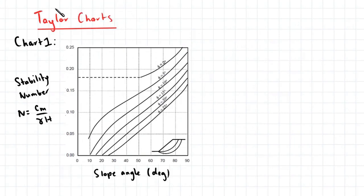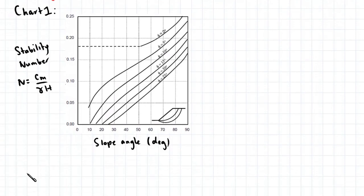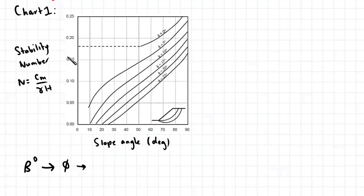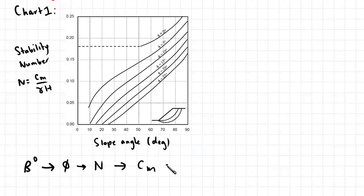Here we have the first Taylor chart. On the horizontal axis we have the slope angle, and on the vertical axis we have the stability number. To use this chart, first you need to determine the angle of the slope, and from there you project vertically upwards until you intersect with the angle of friction in the Taylor chart. Once you have intersected with that line, you project horizontally across until you intersect with the axis which has the stability numbers. Because you know the unit weight of the soil and the height of the slope, you'll be able to determine the mobilized cohesion, and from there you'll be able to determine the factor of safety of the slope.